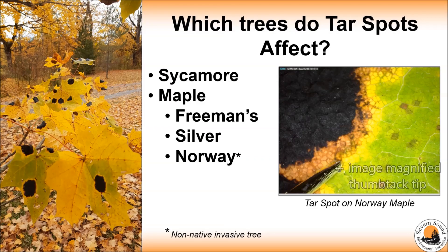We often see tar spots on Sycamore, Freemans, Silver, and Norway maple. Freemans maple is a hybrid of red and silver maples that naturally hybridizes in the wild. Norway maple is a non-native invasive species.